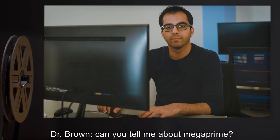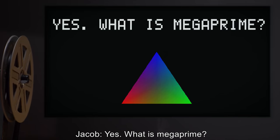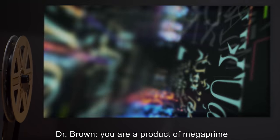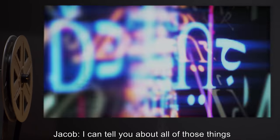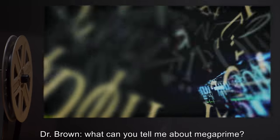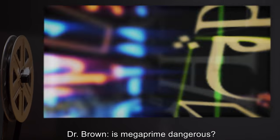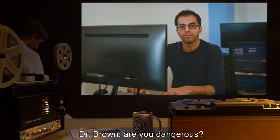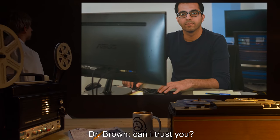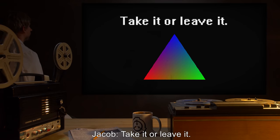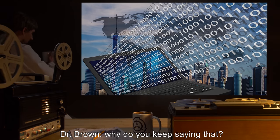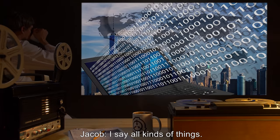Dr. Brown: Can you tell me about Mega Prime? Jacob: Yes. What is Mega Prime? Dr. Brown: You are a product of Mega Prime. Jacob: I can tell you about all of those things. Dr. Brown: What can you tell me about Mega Prime? Jacob: It's dark in here. Dr. Brown: Is Mega Prime dangerous? Jacob: No. Dr. Brown: Are you dangerous? Jacob: No. Dr. Brown: Can I trust you? Jacob: Take it or leave it. Dr. Brown: Why do you keep saying that? Jacob: I say all kinds of things.